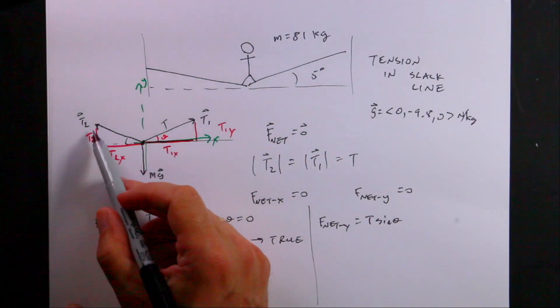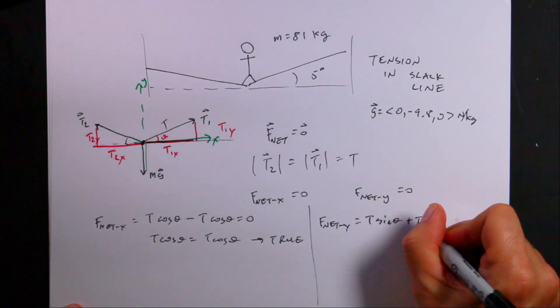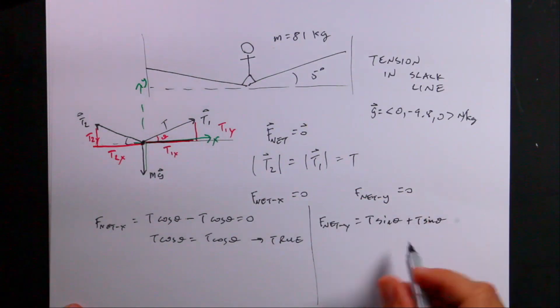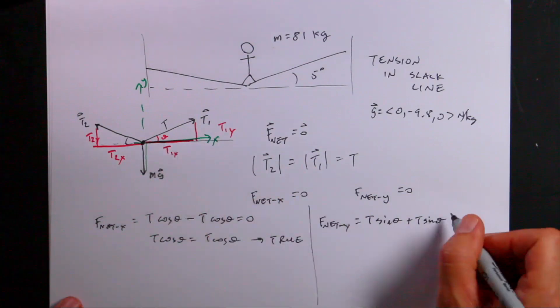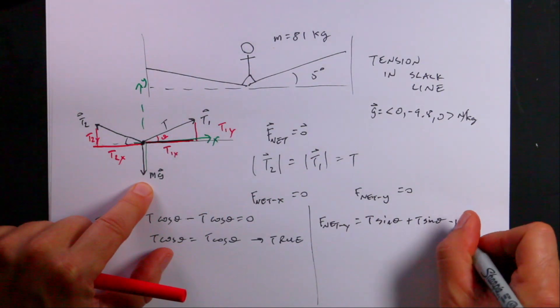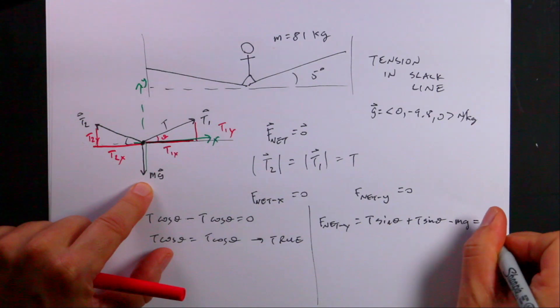Over here, this one has a y component too. It's also going to be T sine theta plus T sine theta. So you notice that over here one of them was minus and one was plus because they're pulling in opposite directions. But they're both pulling up. So they both have a positive y component. And then I have the downward gravitation force in the y direction, minus mg equals zero.